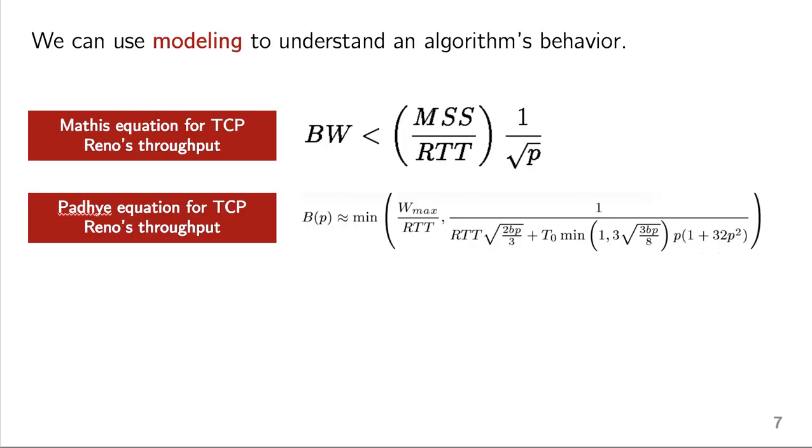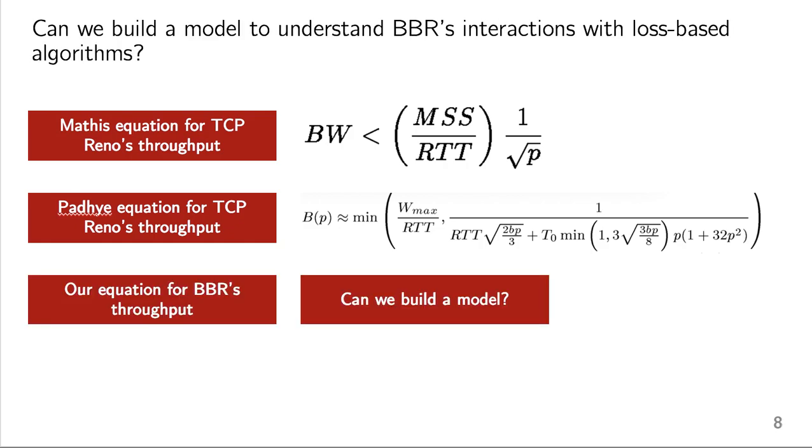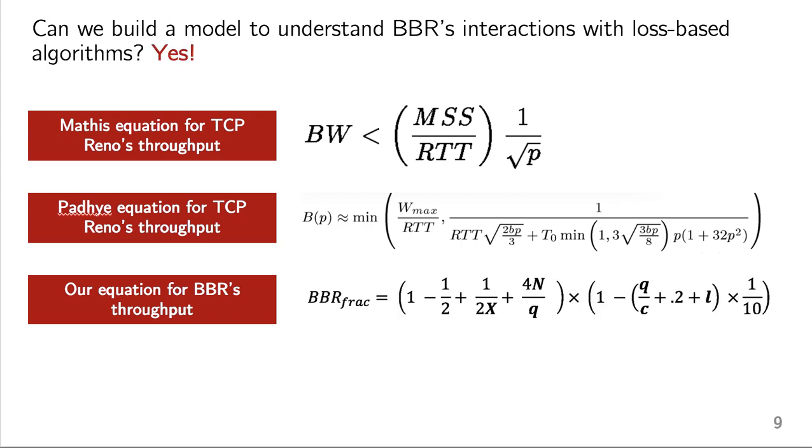In the past, we've seen we can use modeling to understand how different congestion algorithms would impact their sending rate. We've seen that with the Mathis equation and the Padhi equation, which showed TCP Reno's throughput relationship to the loss rate. So we ask, can we build a model similar to those that can help us understand BBR's interactions with loss-based algorithms? And the answer to that question turns out to be yes, of course.